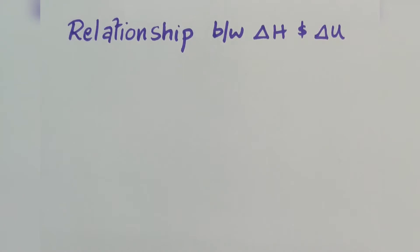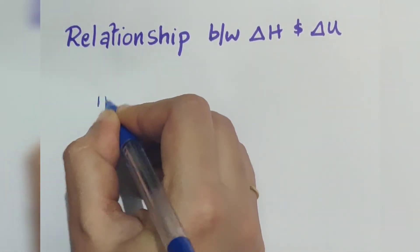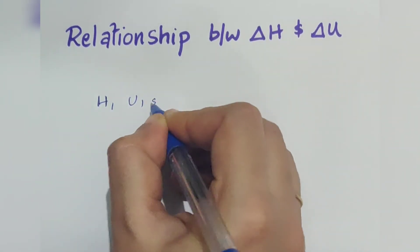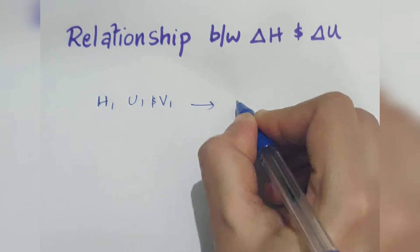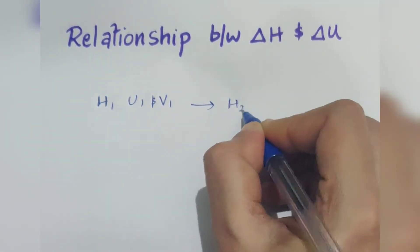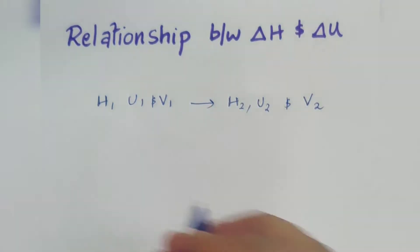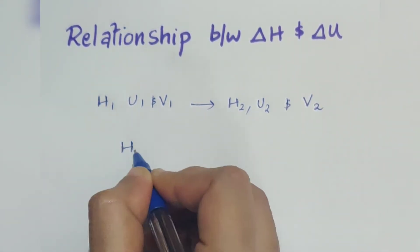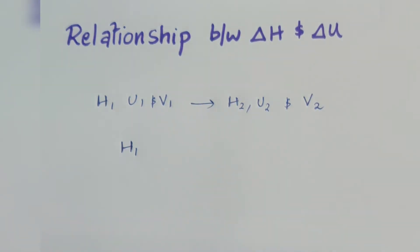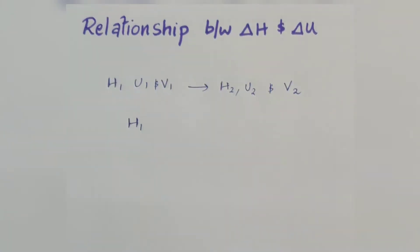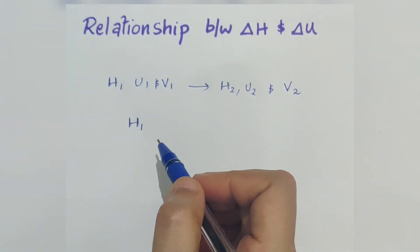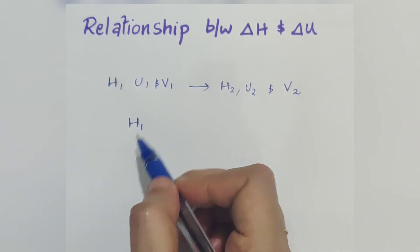Let us consider a process carried out at constant pressure. Let enthalpy, internal energy, and volume of the system change from their respective initial states — H1, U1, and V1 — to final states H2, U2, and V2. Here H1, U1, V1 are the enthalpy, internal energy, and volume of the initial states.